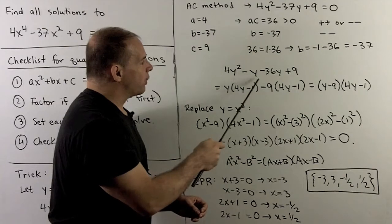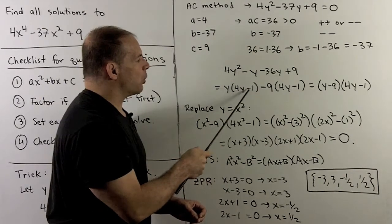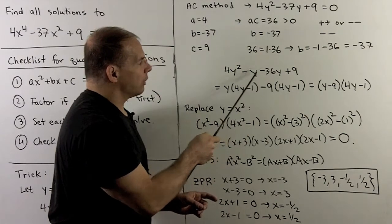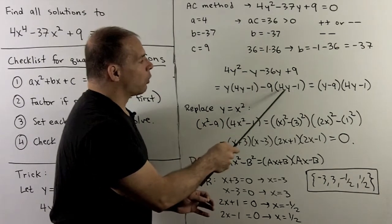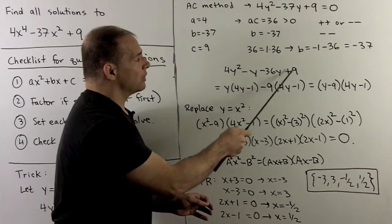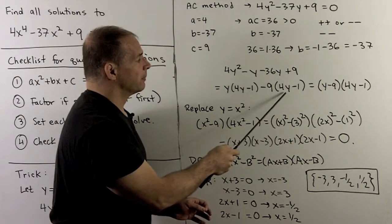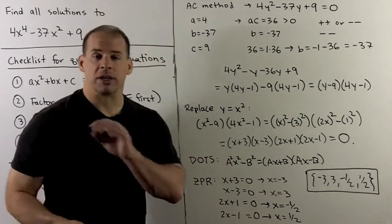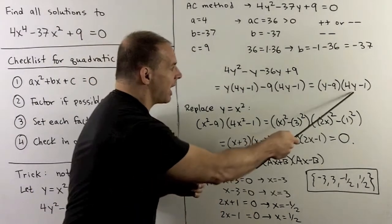Out of the first two, I can pull out a y, leaving a 4y minus 1. Out of the second two, I can pull out a 9 with a minus sign, leaving a 4y minus 1. Remember, if I factor out a negative, that's going to turn this plus to a minus. Now, the 4y minus 1 matches in both, so I can factor that out, and I'm left with a y minus 9.